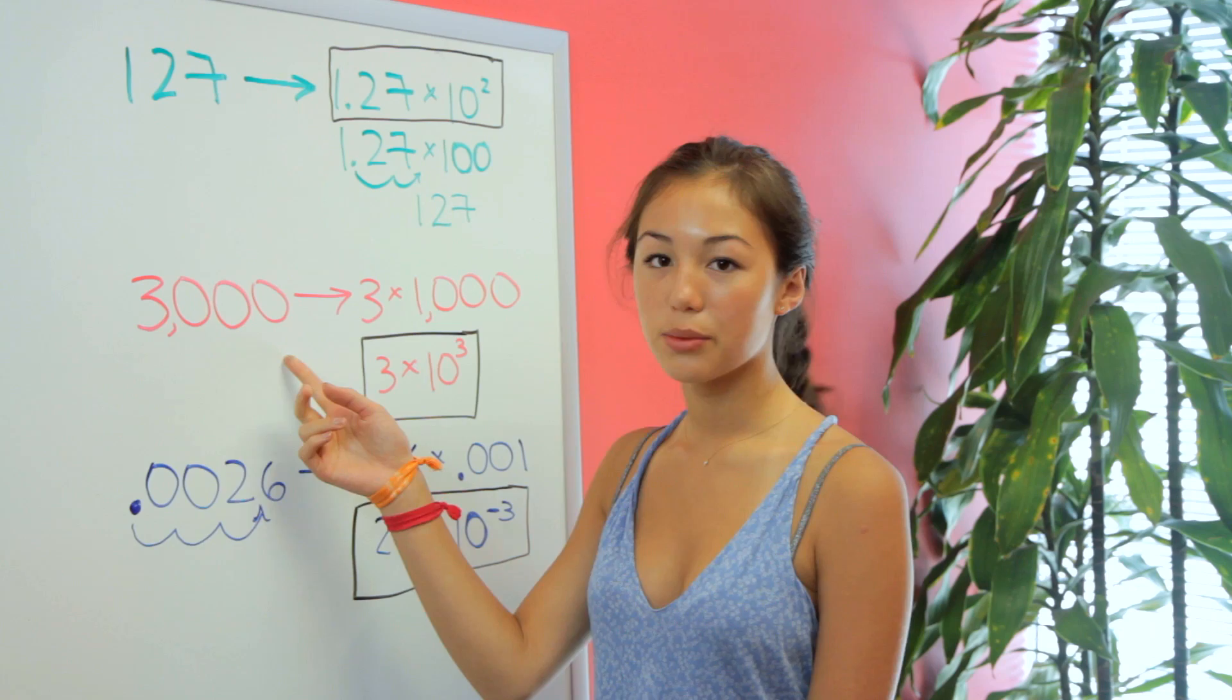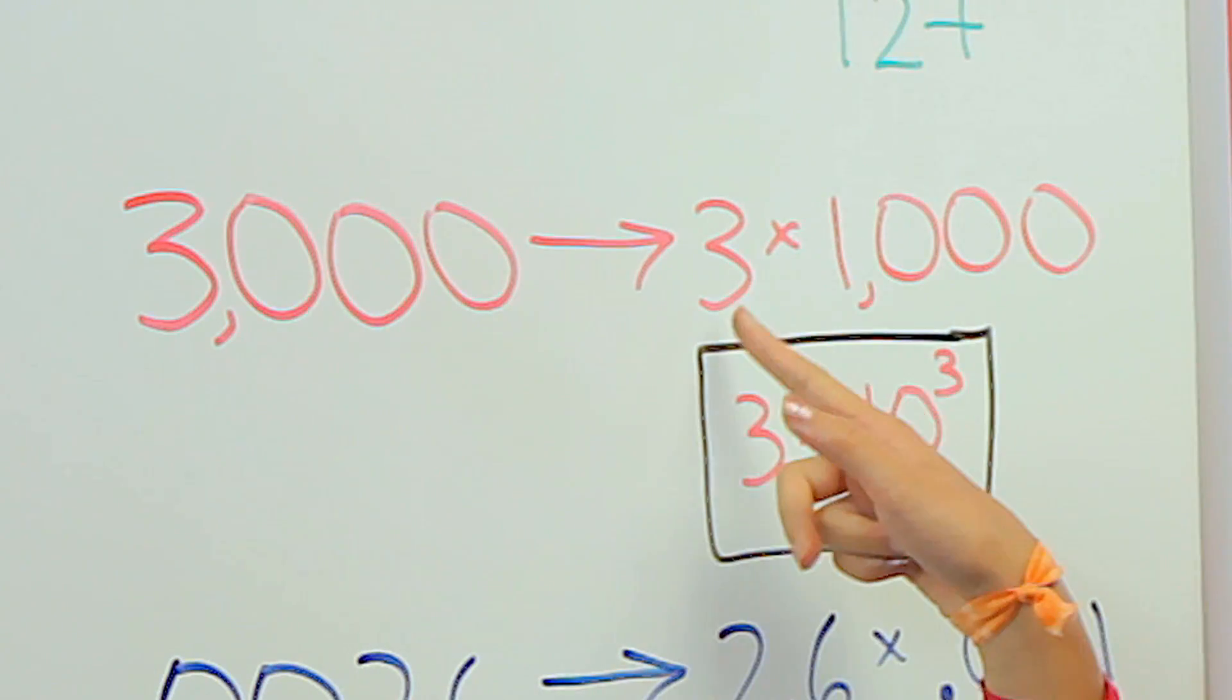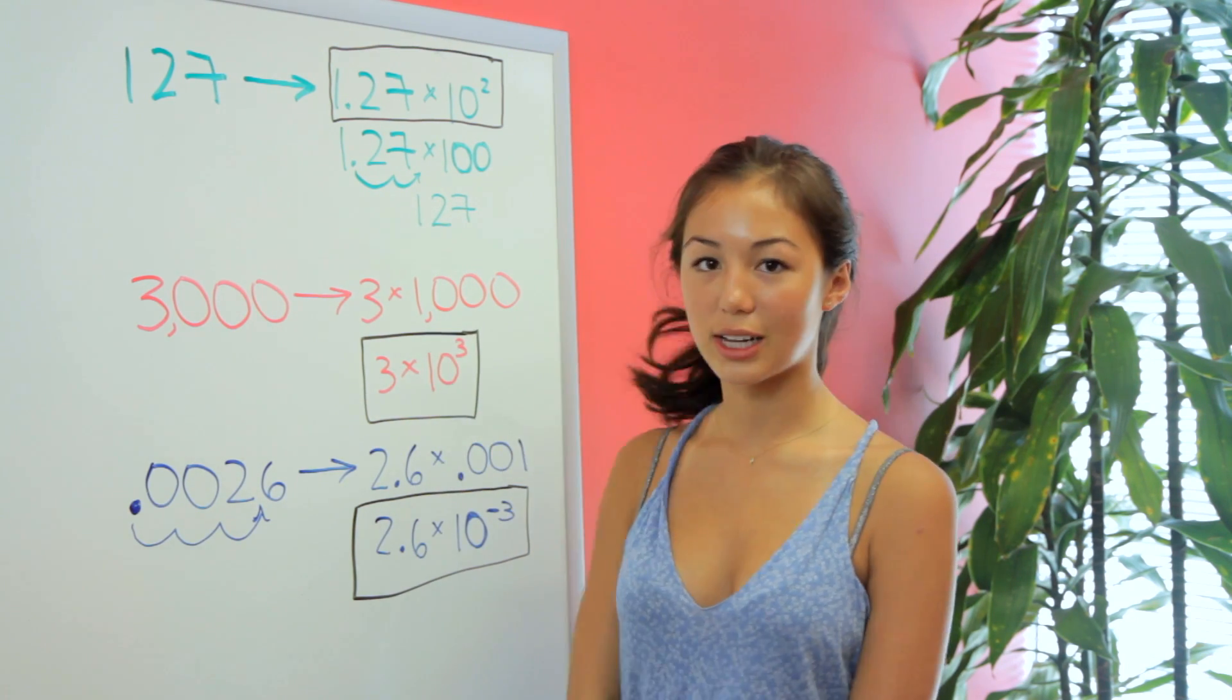So here with 3000, we have 3 times 1000, and then we can just simplify this to 3 times 10 to the third. So this is scientific notation.